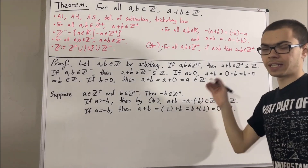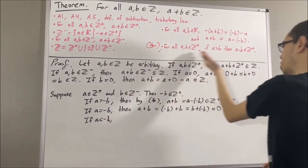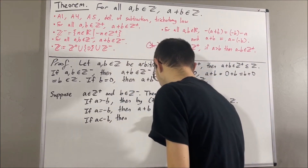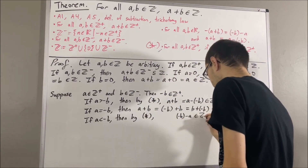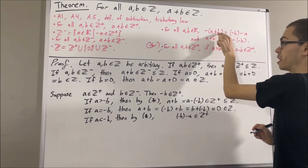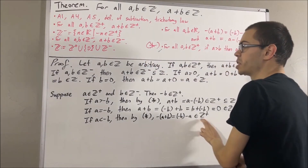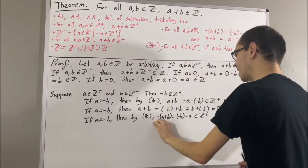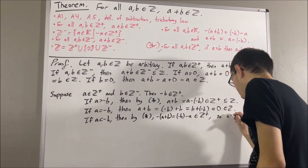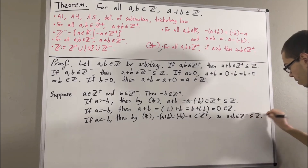Finally, let's consider the case a is less than the negative of b. By star, the negative of b minus a is a positive integer. But the negative of b minus a equals the negative of (a plus b), so the negative of (a plus b) is a positive integer. By definition of the negative integers, this means a plus b is a negative integer. Since the negative integers is a subset of the integers, a plus b is an integer.